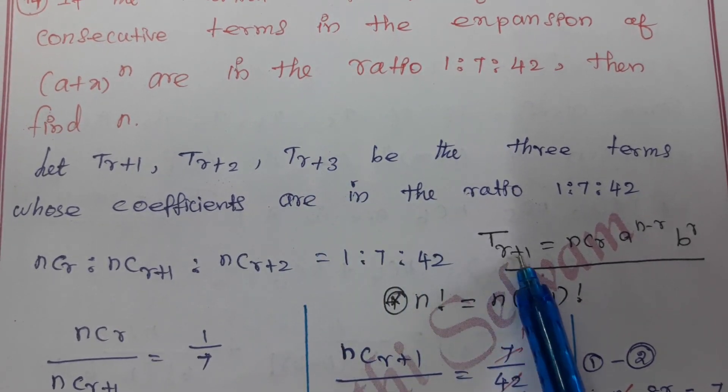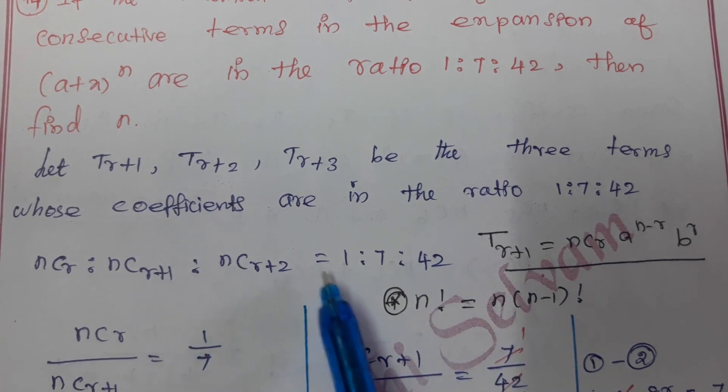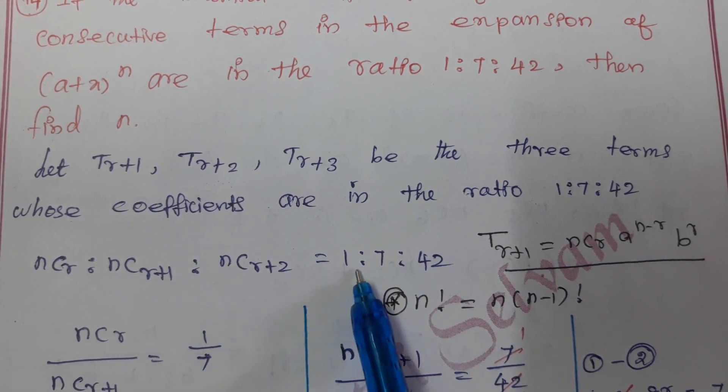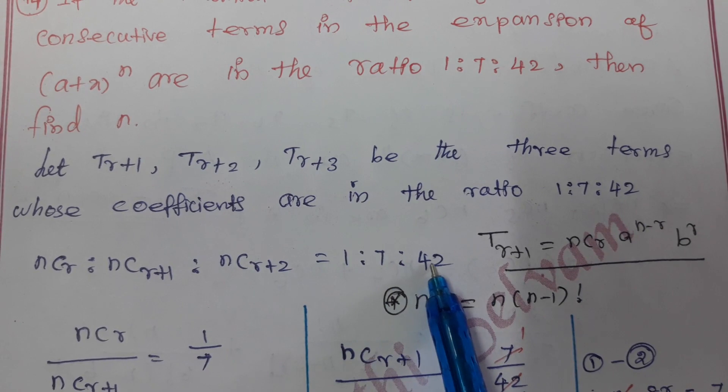Therefore, NCr, NCr+1, and NCr+2 are in the ratio 1:7:42.